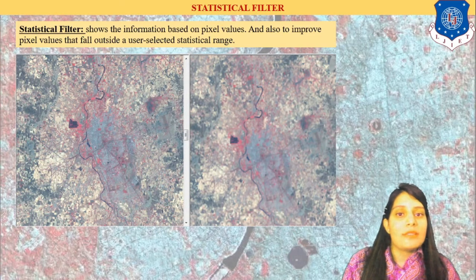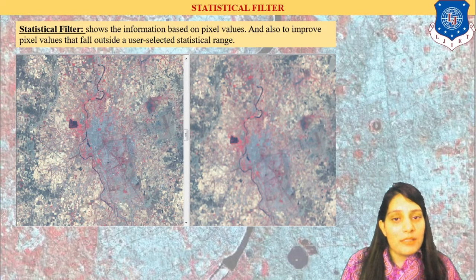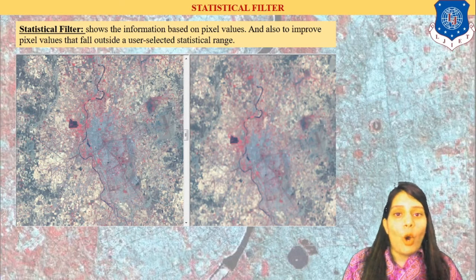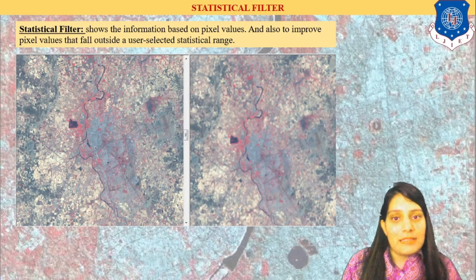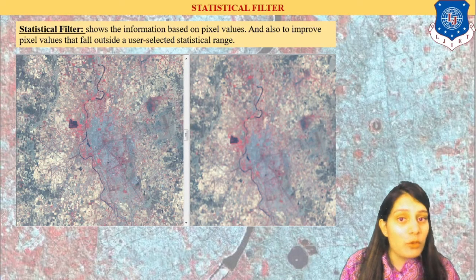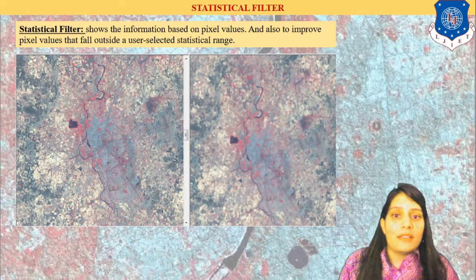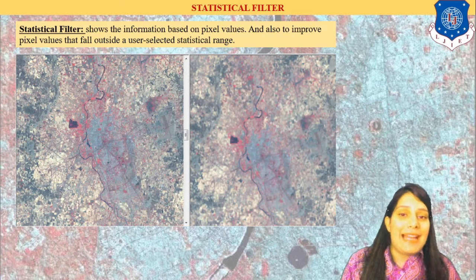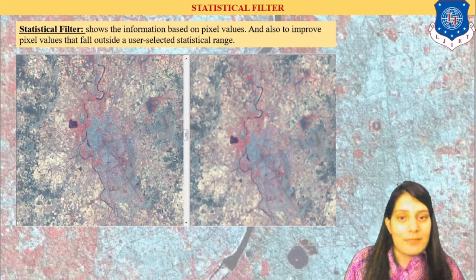Statistical filters also improve pixel values that fall outside the required area. If I don't require a certain area and it is showing a misleading or misinterpreted image area, the statistical filter helps identify it. All these filters are applied to our analysis to enhance our digital remotely sensed image. We then apply classification techniques on it, understand the image histogram, identify feature classes, interpret the image, and finally do the data integration with GIS. Thank you.